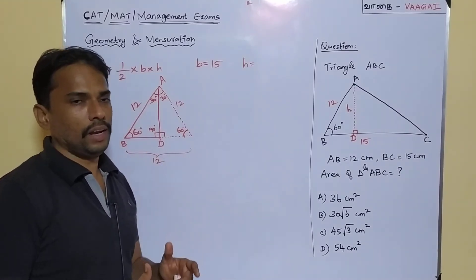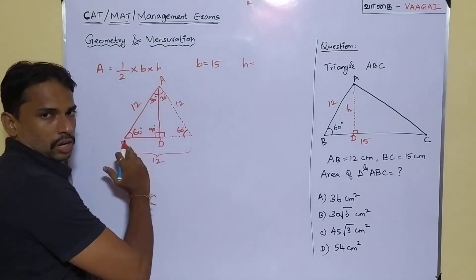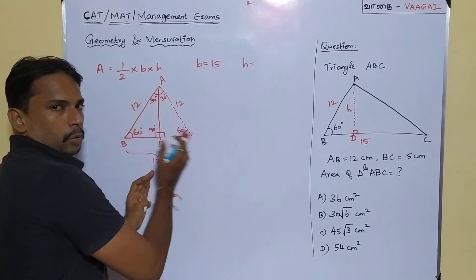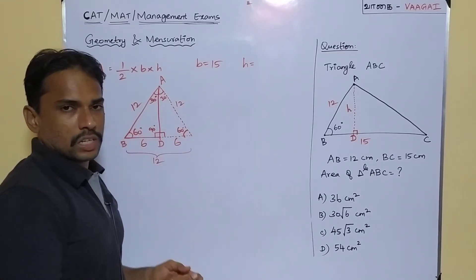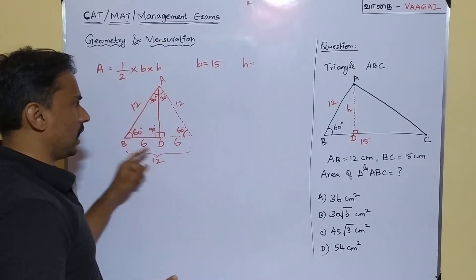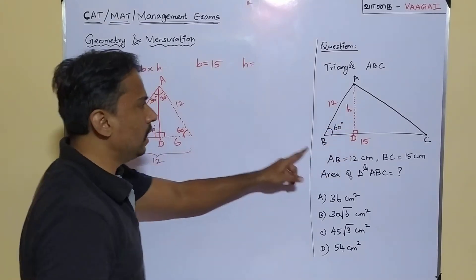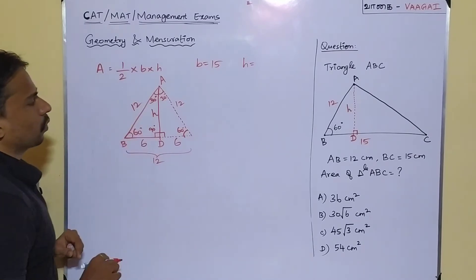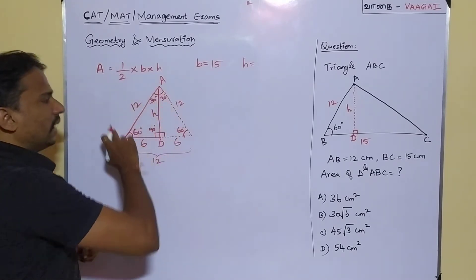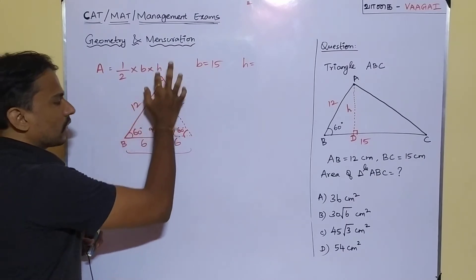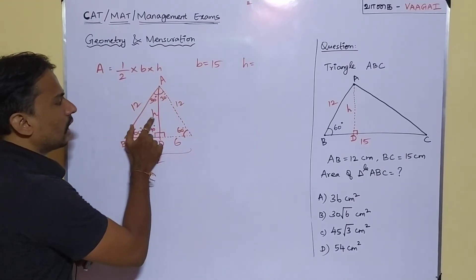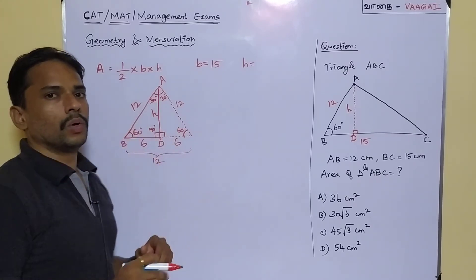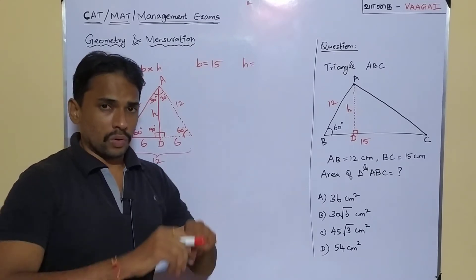In an equilateral triangle, the height exactly bisects the base, breaking it into two equal parts. So the full base of 12 is broken into 6 and 6. We are doing all these constructions just to find the missing height AD. Now we have a right-angle triangle with hypotenuse 12, base 6, and height H. We can apply Pythagoras theorem: H² + 6² = 12².